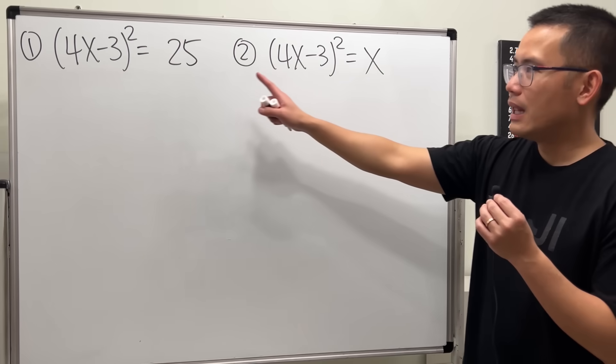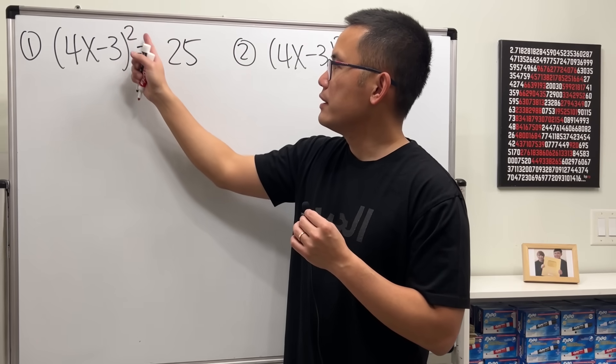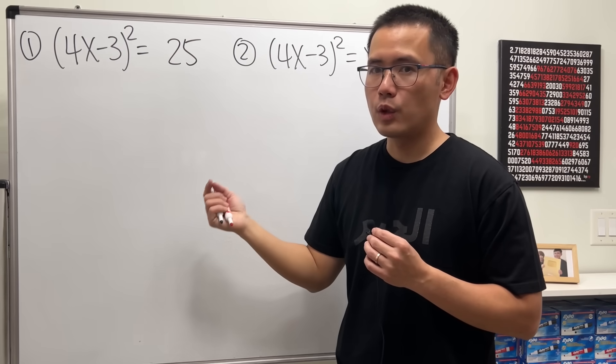Done? Okay. Let's get started with the first one. We have x inside, squared, is equal to a number.